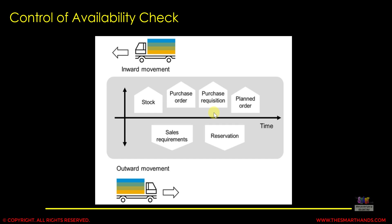The system considers all these inward and outward movements and then gives you a confirmed date. In the next video we'll talk more about different scenarios where this inward and outward movement calculation happens. For now, we just need a basic understanding of how the system performs the availability check while considering these movements.